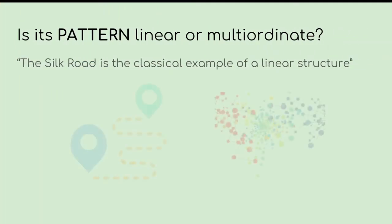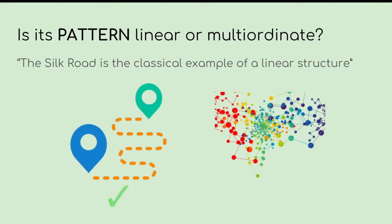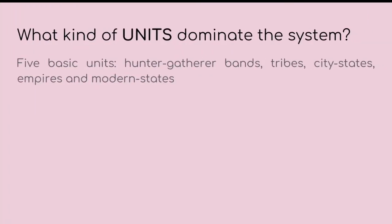Is its pattern linear or multi-ordinate? The Silk Road is the classical example of a linear structure. Proof of this is that although many regions were involved in the trade of Chinese silk — such as Africa, the Middle East, India, Indonesia, and Central Asia — it is unlikely that these regions were all aware of one another as consumers of Chinese silk. Before the establishment of the Silk Road, in Eurasia there were fully fledged international systems where all sectors were represented, including political and military. The Silk Road connected these systems following a linear pattern, thereby managing to create an international economic system.